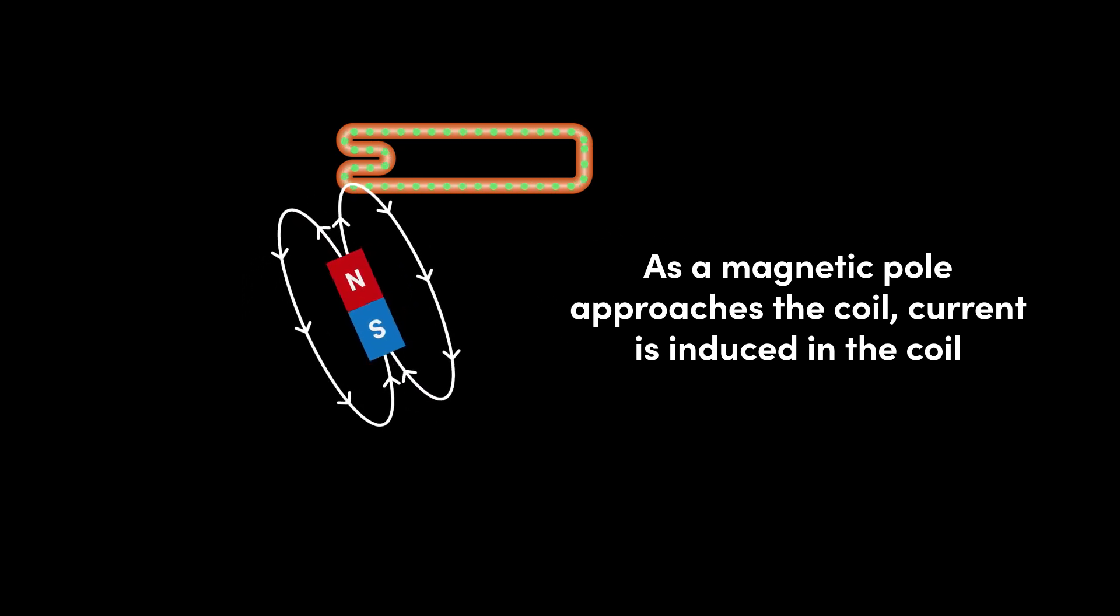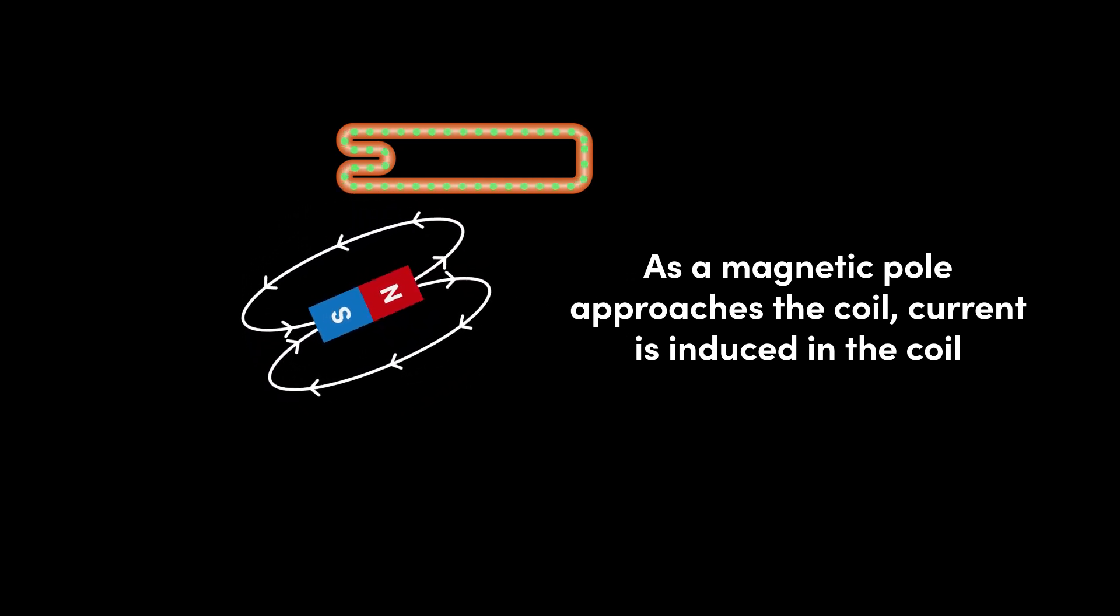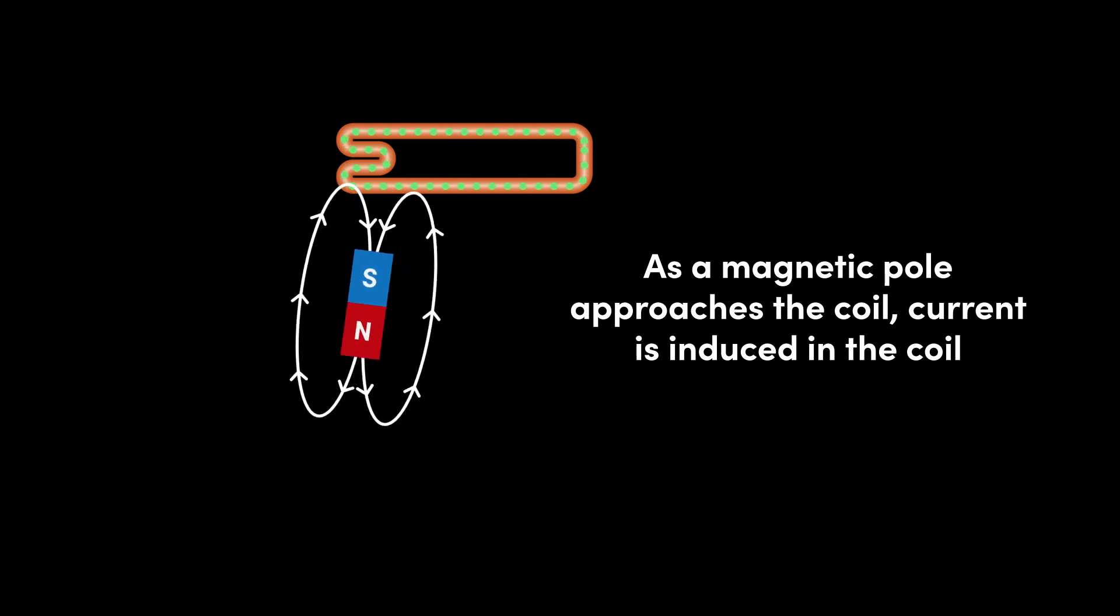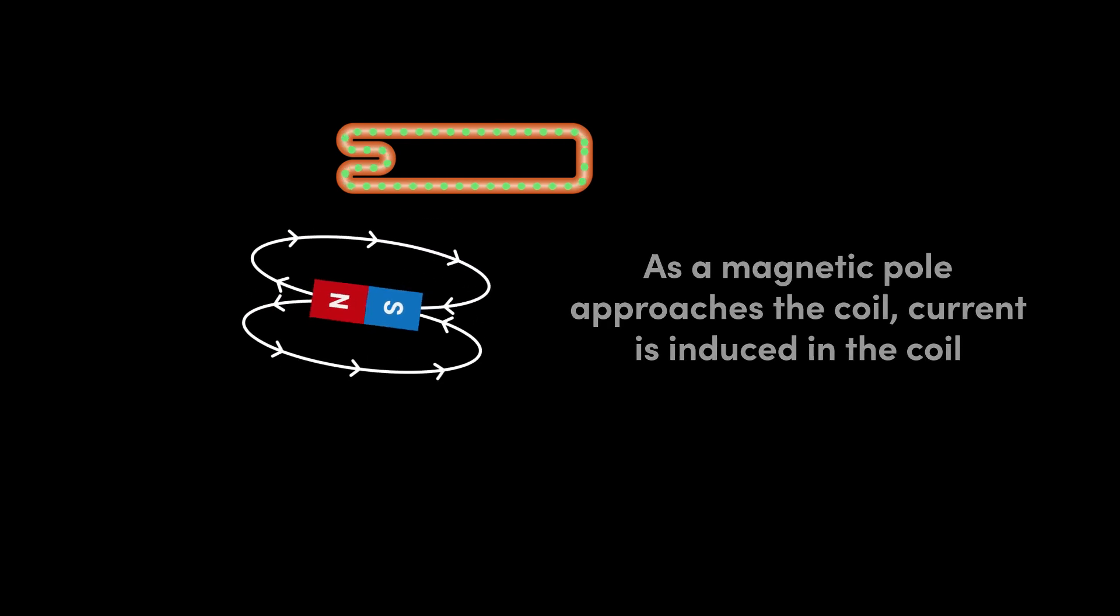As the magnet continues to rotate and the south pole leaves the coil, the decreasing strength of the magnetic field decreases the strength of the current, eventually back to zero as the center of the magnet faces the coil once again.